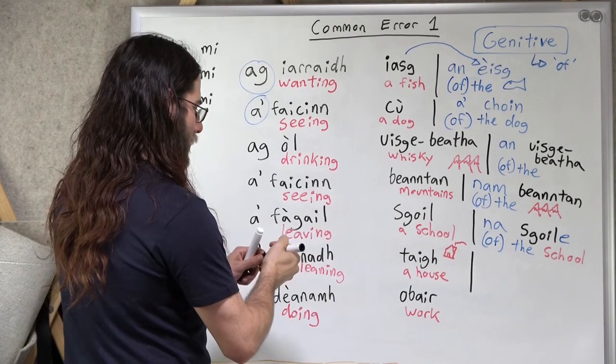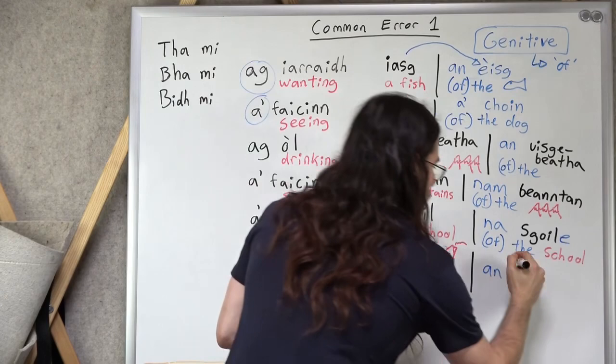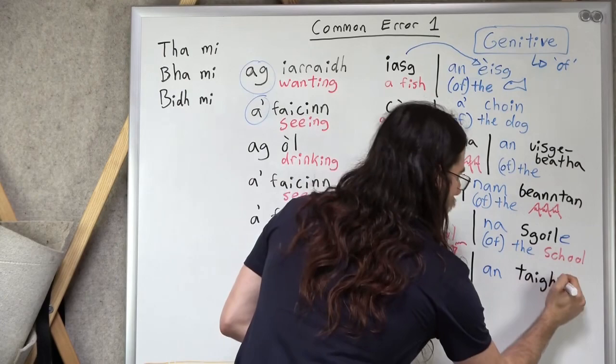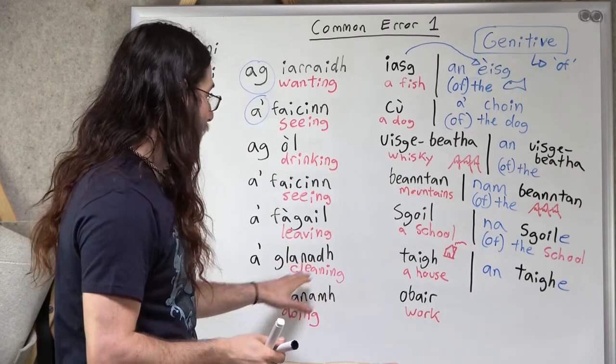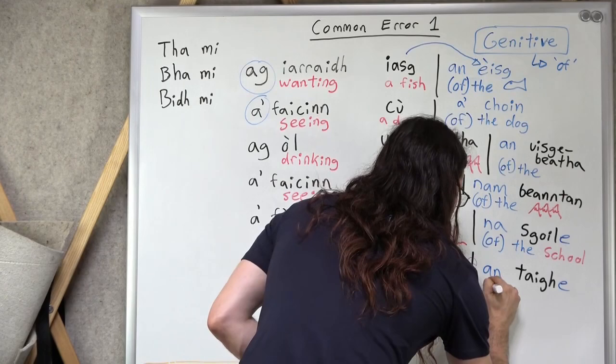A' glanadh. Start with a' glanadh. A' glanadh. A' glanadh an taighe. Cleaning of the house. I am cleaning of the house.